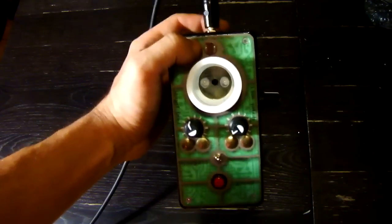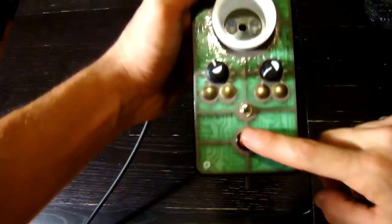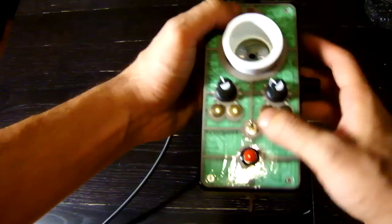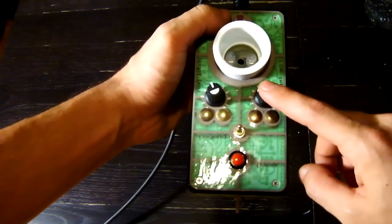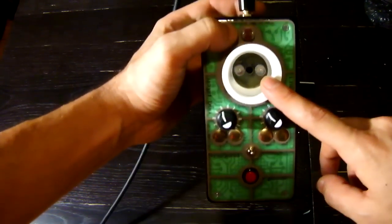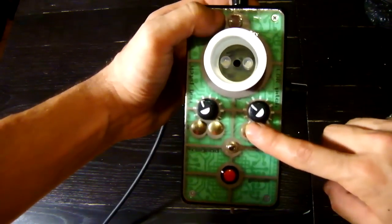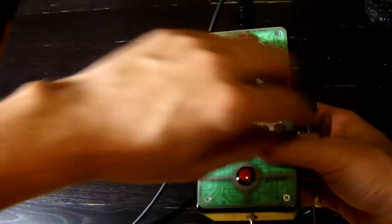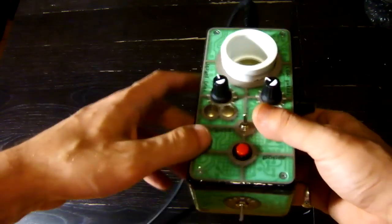On the front we got the big red momentary switch right here, turns the sucker on. And here we have our pitch for the Theremin sound. Body contacts control the pitch also. So we have hand movement, the knob, and the body contacts.